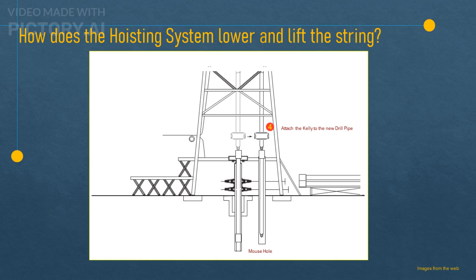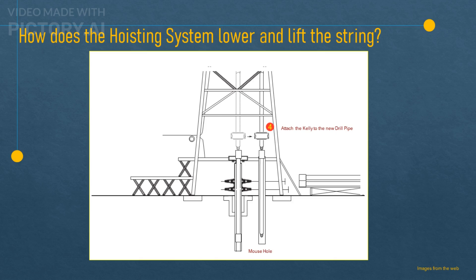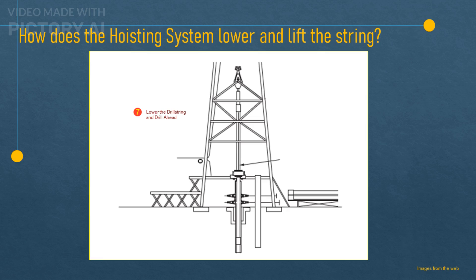Step 4. You stab the kelly into the new joint, screw it together and use tongs to tighten the connection. Step 5. You lift the kelly and new joint out of the mouse hole and swing the assembly back to the rotary table. Step 6. You connect the new drill pipe into the drill pipe above the rotary table. Step 7. You run the string down and drill ahead.